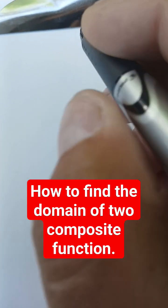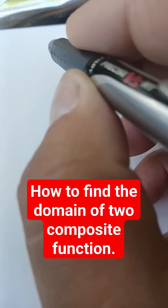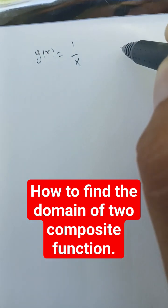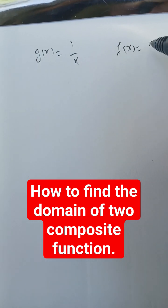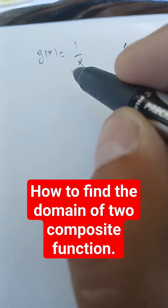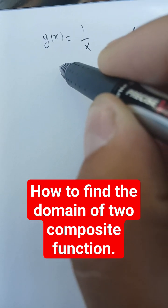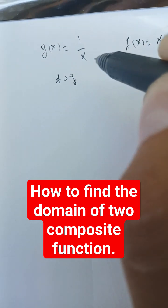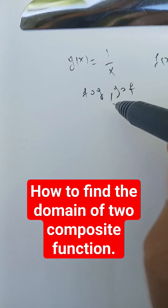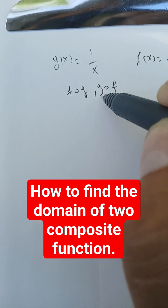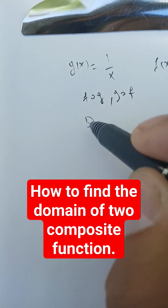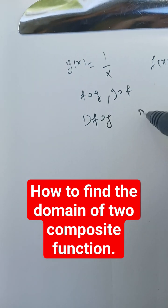Given the following two functions, g of x equals 1 over x, and f of x equals x, we want to find the composite of g and f, and f and g. We also want to find the domain of these two.